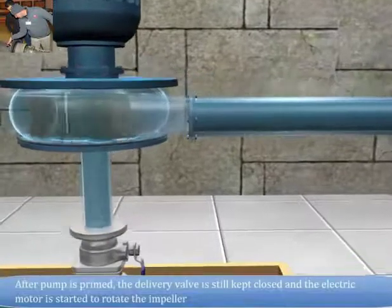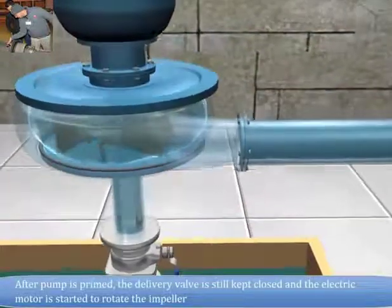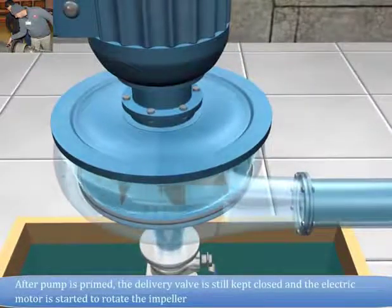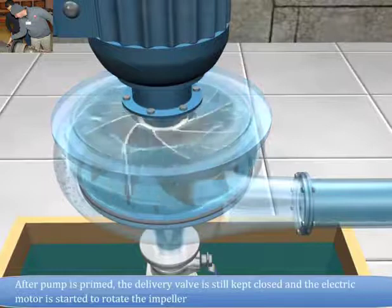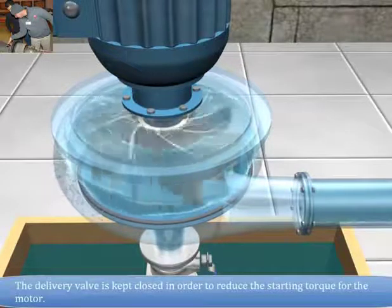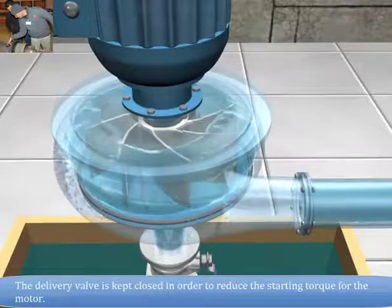After pump is primed, the delivery valve is still kept closed and the electric motor is started to rotate the impeller. The delivery valve is kept closed in order to reduce the starting torque for the motor.